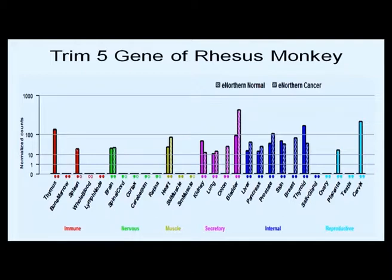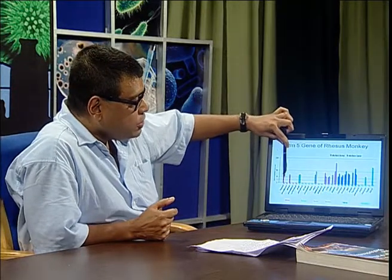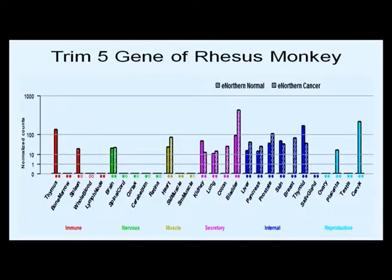The TRIM5 gene was denoted by Stroe in 2003, discovered in rhesus monkey. Since HIV originates from rhesus monkeys, they found a gene in the monkey that is resistant to HIV. They clearly showed that specific TRIM5 expression in particular organs will make that organism resistant against HIV infection. So from the originator itself, we have an answer to resisting HIV infection.